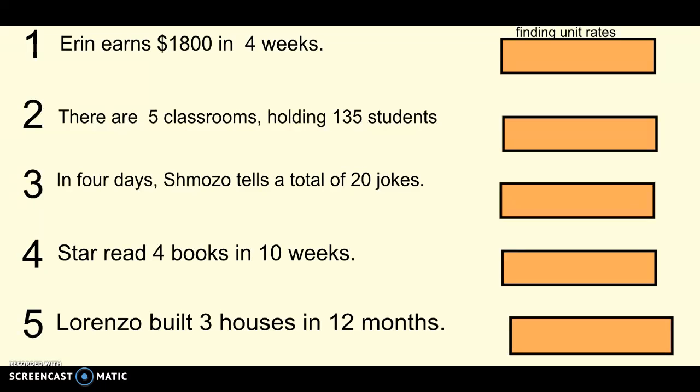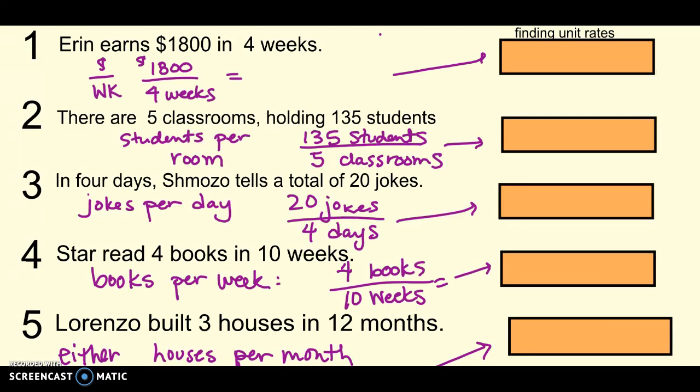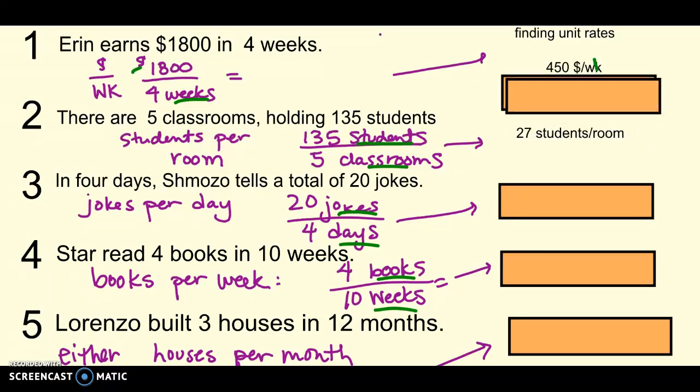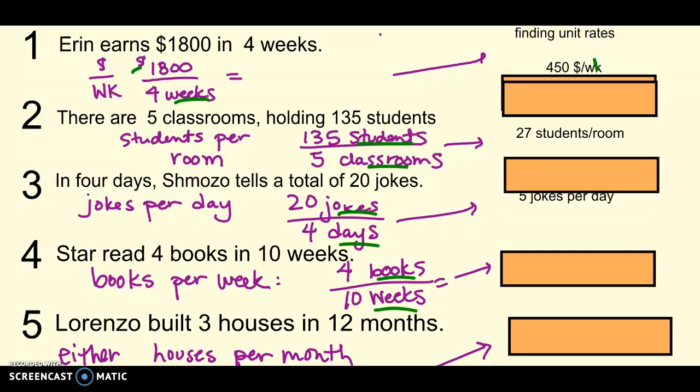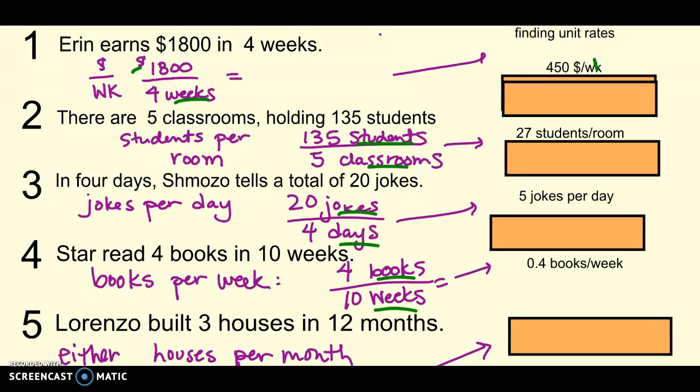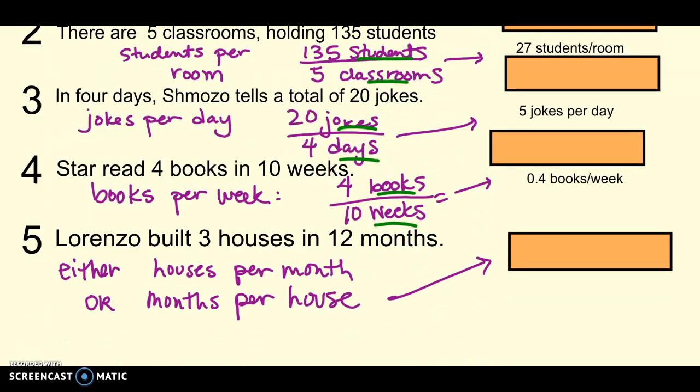We're almost out of time on this video. But I do want you to try these five as practice. Find the unit rates. Think about which way to set it up that makes more sense, and actually divide them. Then find the answers. Pause and then we'll come back and check them together. So I've written down the rates that I would set up and find. Make sure every single thing is labeled. Anytime you write down your rates, everything gets a label. Dollars per week, I get $450 per week. Number two, I get 27 students in each classroom. And five jokes per day. Make sure you have labels on all your answers. 0.4 books read each week. And then the last one.